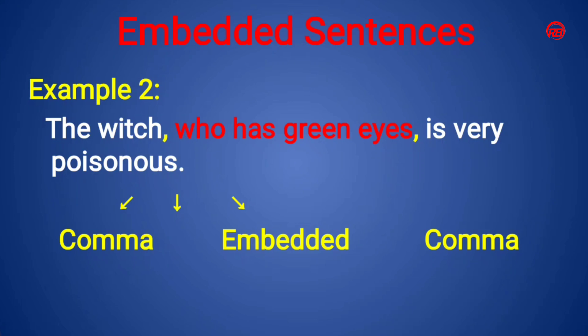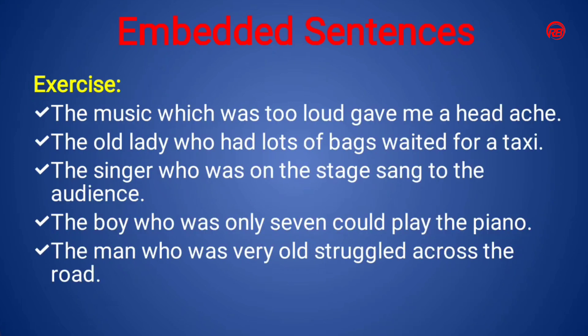Here is another example: 'The witch, who has green eyes, is very poisonous.' Here again, 'who has green eyes' is the embedded clause appearing in the middle of the sentence, giving additional information about the subject. Now here are a few exercises — find the embedded sentence and mark the embedded clause with the punctuation mark, that is, a comma.